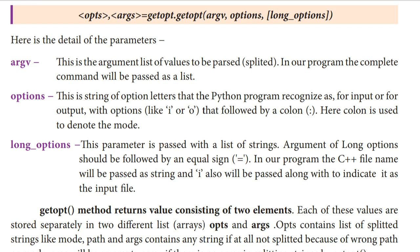Options — so option means the mode. Which mode? Already you know we have two modes: one is input, another one is output. We have to mention the mode here. This is a string of option letters that the Python program recognizes — for input or output. So we have to mention input or output, with options like i, r, or o. i means input, o means output.